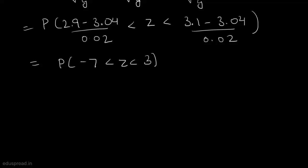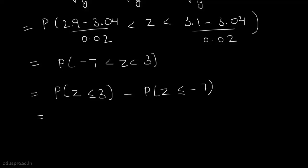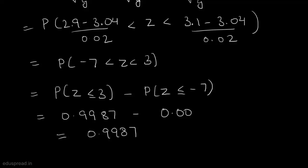Since z is a continuous random variable, we apply the same proposition: P(−7 < Z < 3) = P(Z ≤ 3) − P(Z ≤ −7). From the standard normal table, P(Z ≤ 3) = 0.9987 and P(Z ≤ −7) ≈ 0, so the desired probability is 0.9987. This means the probability that machine 2 will produce an acceptable cog is 0.9987. As this probability is greater than 0.6826, machine 2 is more likely to produce an acceptable cog.